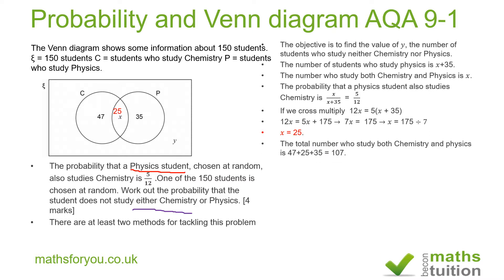So x is 25. This means the total number of students who study physics or chemistry is 47 plus 25 plus 35, and that gives us 107. We've found the x value and now we move to the bigger sample space — all of that.